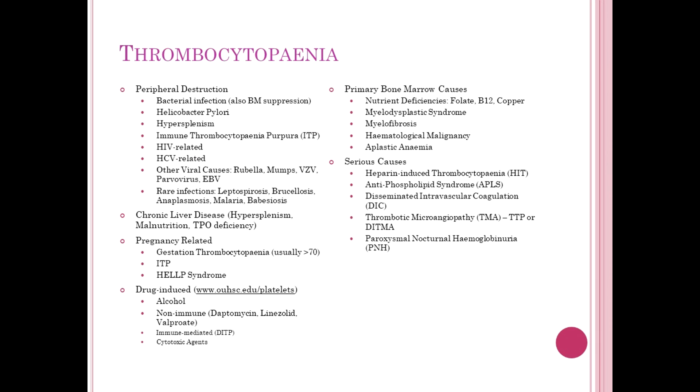Low platelets is thrombocytopenia — thrombo meaning platelets, cyto meaning cells, penia meaning low. The key question is: is this due to bone marrow suppression or bone marrow disease (primary disease or secondary suppression from medications, sepsis, or inflammatory states), or is there peripheral destruction or consumption? Peripheral causes include immune thrombocytopenia purpura (ITP — antibody-mediated platelet destruction), thrombotic thrombocytopenic purpura (TTP — inappropriate clotting consuming platelets), and disseminated intravascular coagulopathy (DIC — a clotting cascade triggered consuming platelets faster than they're produced).